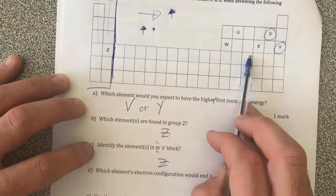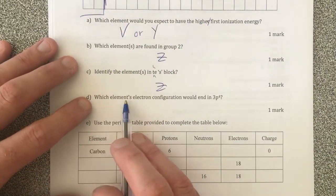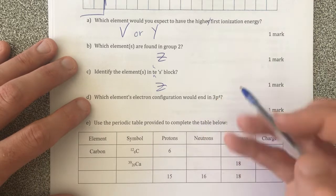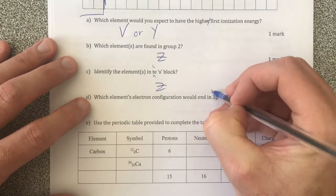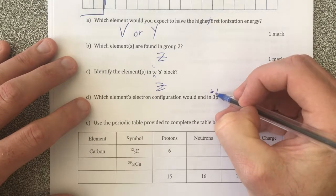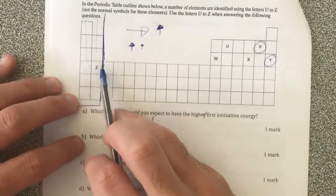Which element's electron configuration would end in 3P4? So that means it's in the third period. It's in the P block and it's the fourth element in the P block. So which one is the fourth element in the P block?